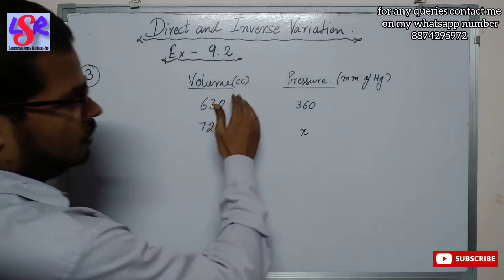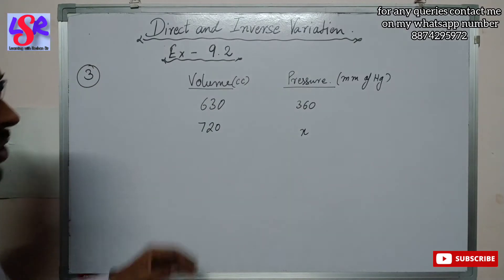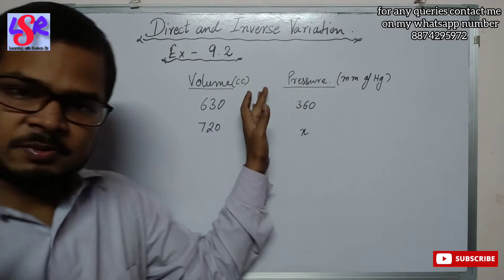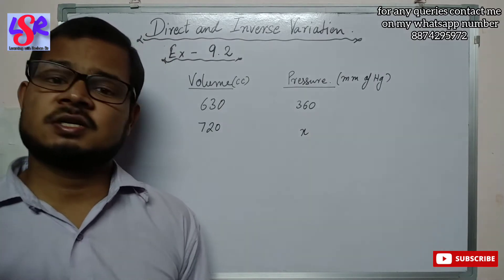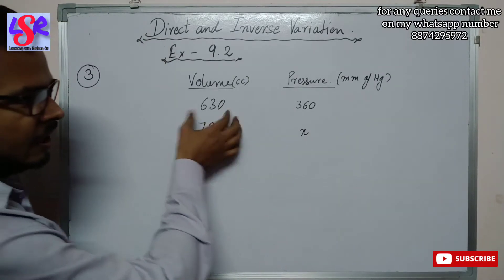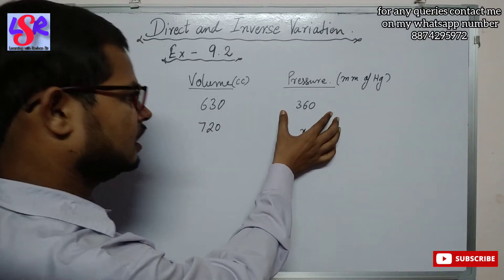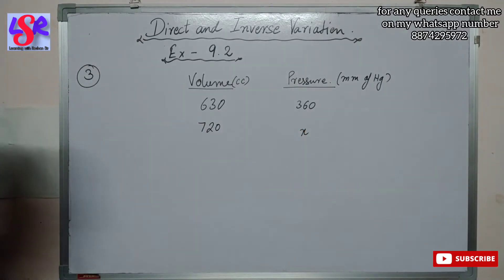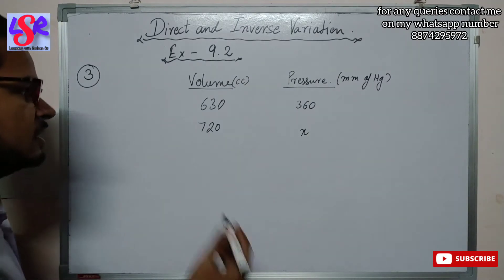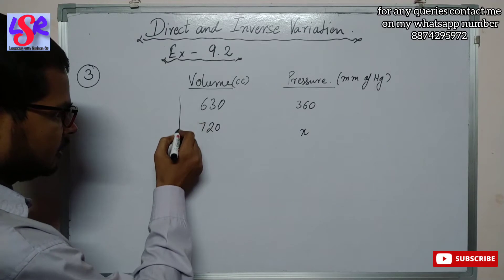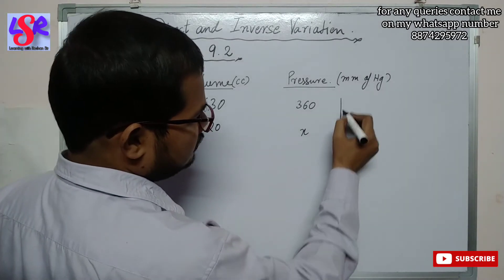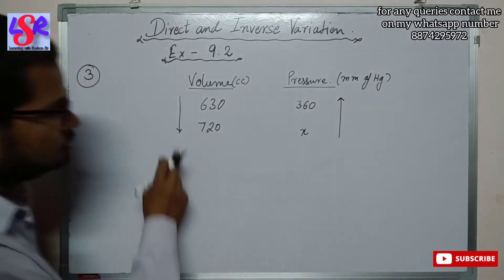In this question we have volume and pressure at constant temperature. It has been given that volume and pressure are inversely proportional to each other when the temperature is constant. We have 630 cm³ of volume at a pressure of 360 mm of Hg, and we need to find the pressure when the volume is 720 cubic centimeters. Since this is inverse variation, we put the arrow in one direction and then in the opposite direction.